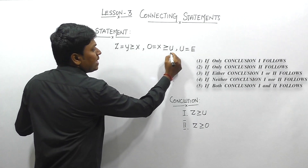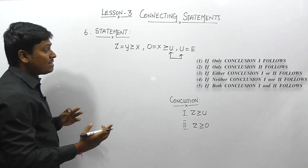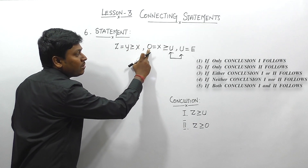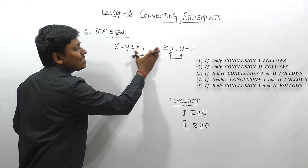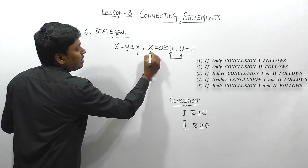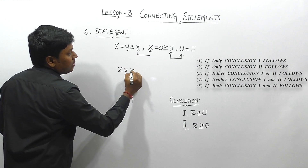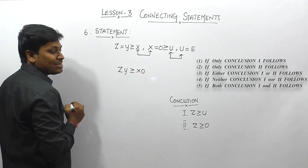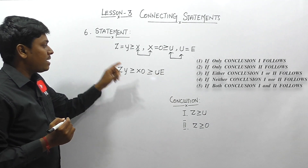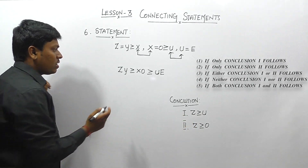Question 6 has three statements. Statement 2 ends at U and statement 3 starts at U, so they connect easily. Statement 1 ends at X and statement 2 starts at O, but since O = X (given in the statement), they are the same and can be connected. The single expression is: Z = Y ≥ X = O ≥ U = E. Z and Y are equal (ZY); X and O are equal (XO); U and E are equal (UE).